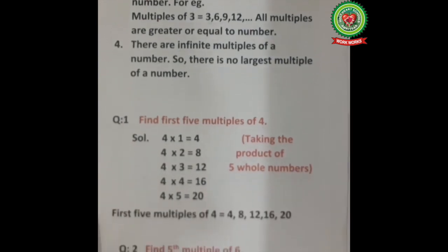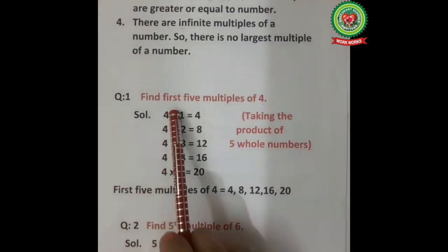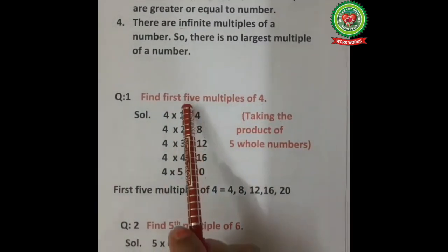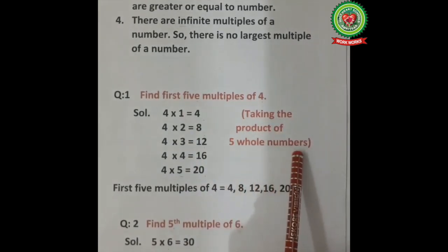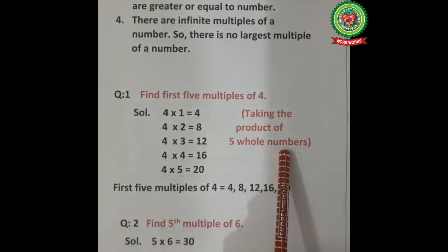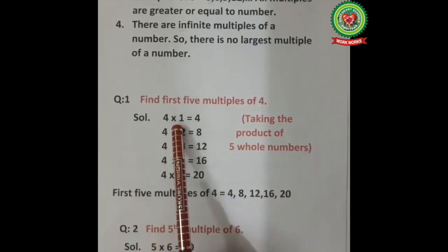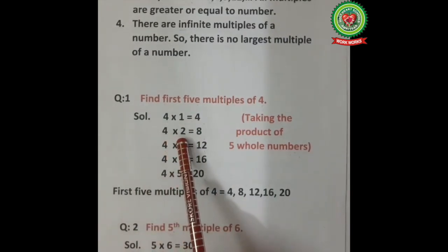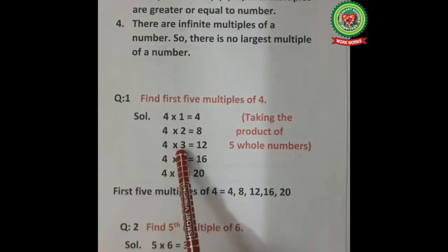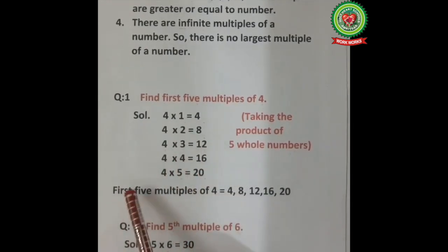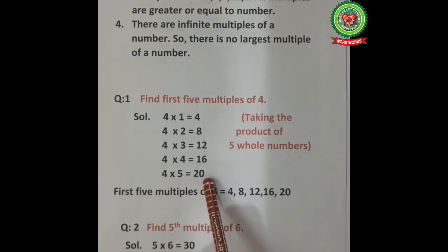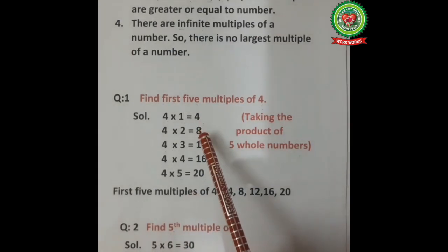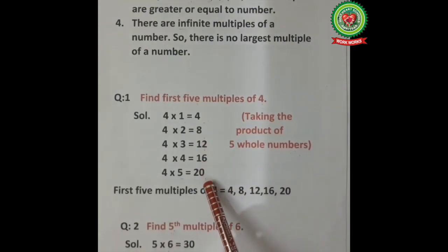Now we will learn to find multiples of a number in different types. Type 1: find the first 5 multiples of 4. When a particular number is given, we take the product of consecutive whole numbers: 4×1=4, 4×2=8, 4×3=12, 4×4=16, 4×5=20. So the first 5 multiples of 4 are 4, 8, 12, 16, and 20.